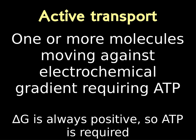Now let's talk about active transport. In active transport, one or more molecules are moving against their electrochemical gradient. This means it always has a positive delta G, which means we always need an input of energy — and that energy comes in the form of ATP.